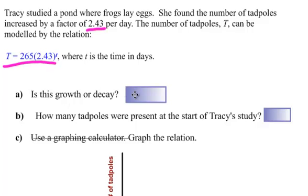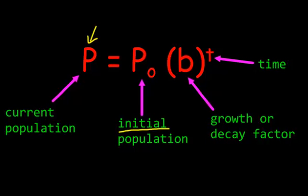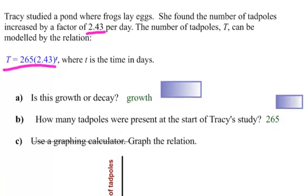Is this growth or decay? Well, it's growth, because 2.43 is a number that's bigger than 1. How many tadpoles were present at the start of Tracy's study? Well, I told you on this page that the initial population is the number in front of the brackets right here. So the initial population, and in this case, the number 265 is in that spot. Sure enough, that is how many tadpoles were present.